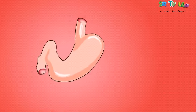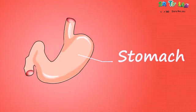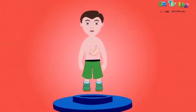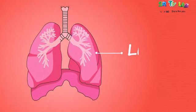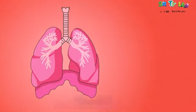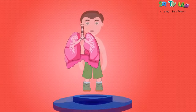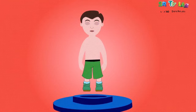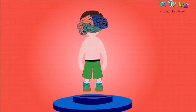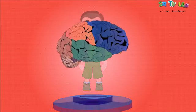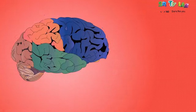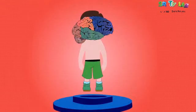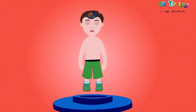Here we see the stomach and where it's located within the body. And here are the lungs, which are part of the respiratory system, and where they are found within the body. And here we find the brain, or the control center of the body. It is found within the head.